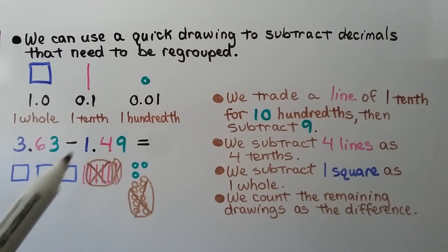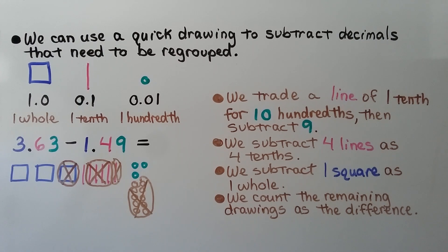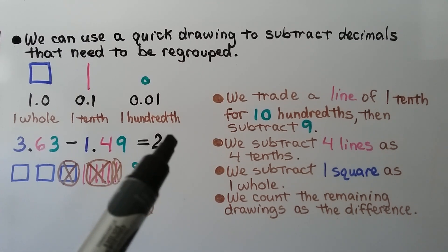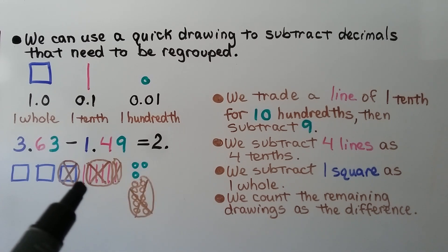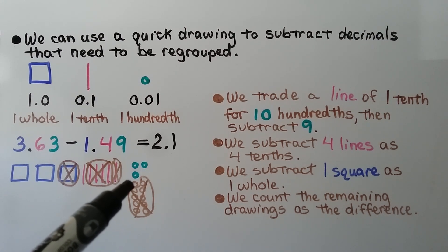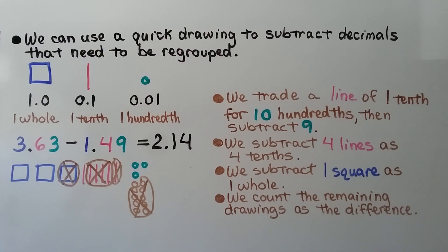We subtract 4 lines as 4 tenths, then subtract 1 square for 1 whole. We count the remaining drawings as the difference. We have 2 wholes, a decimal point, 1 tenth, and 4 hundredths. The difference is 2 and 14 hundredths.